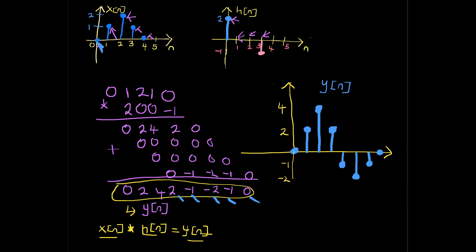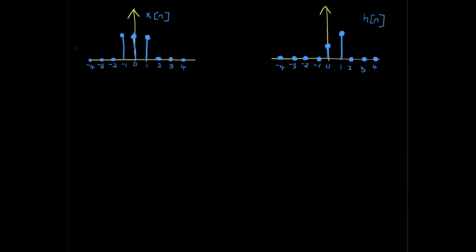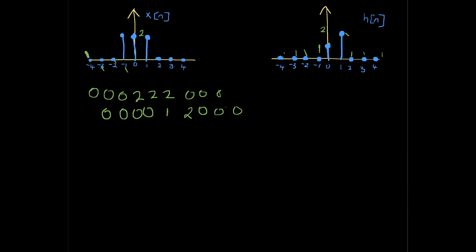Alright, let's go to another example. Using the knowledge from the last example, let's tackle this problem. From X[n] you're going to have: zero, zero, zero, two, two, two, zero, zero, zero. And for H[n], remember I told you to shift it — so we have: zero, zero, zero, zero, zero, one, two, zero, zero, zero, zero.